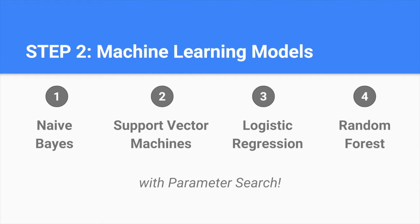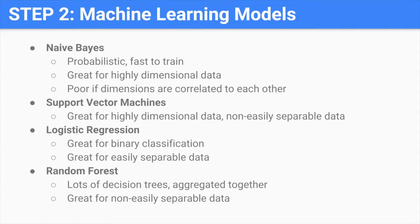Step two is to train models using machine learning. Given that our data is highly dimensional and the output label is binary, we propose four types of models: Naive Bayes, Support Vector Machine, Logistic Regression, and Random Forest. They all have their own advantages and disadvantages that might affect the result of our filter. By training and comparing their results, we can select the model that best achieves our goal.